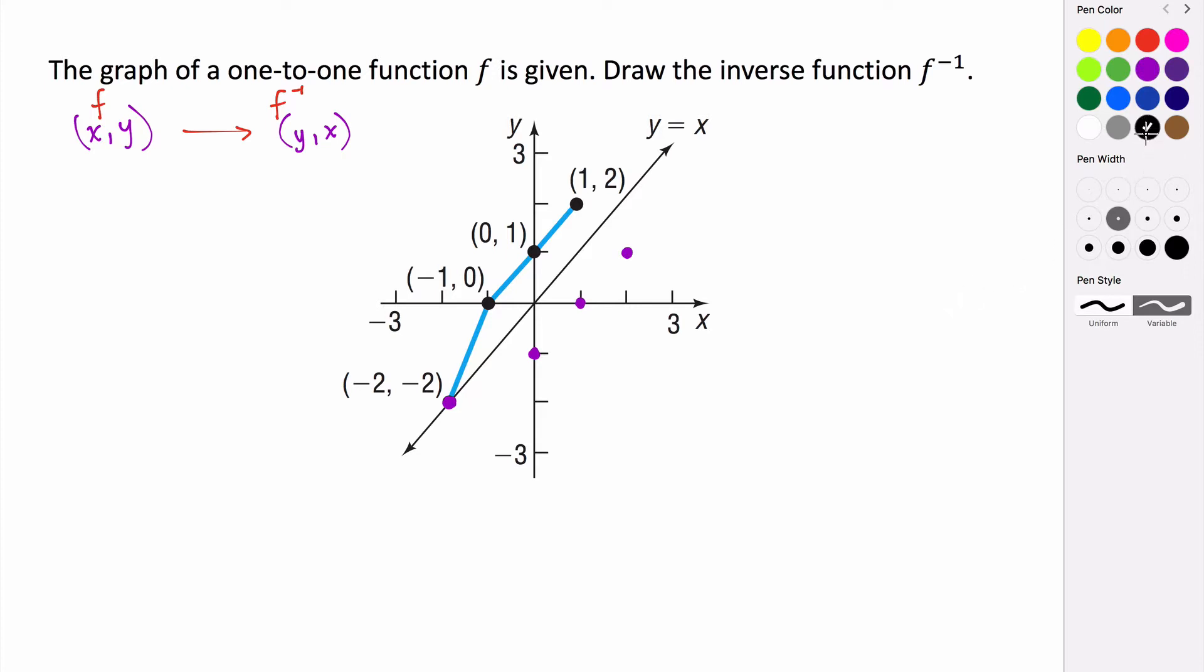To finish this off, I can just take my points and connect them to draw this line. So this here, and then connect these like this, and that would be my function. So this is my inverse.